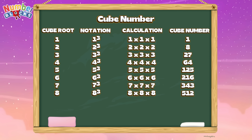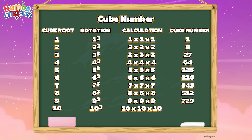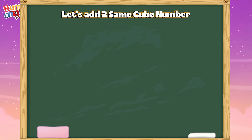Next is 9: 9 cube, or 9 times 9 times 9, equals 729. And lastly, 10: 10 cube, or 10 times 10 times 10, equals 1,000.